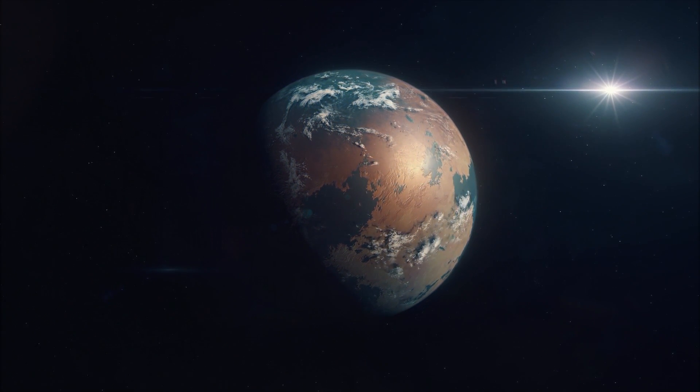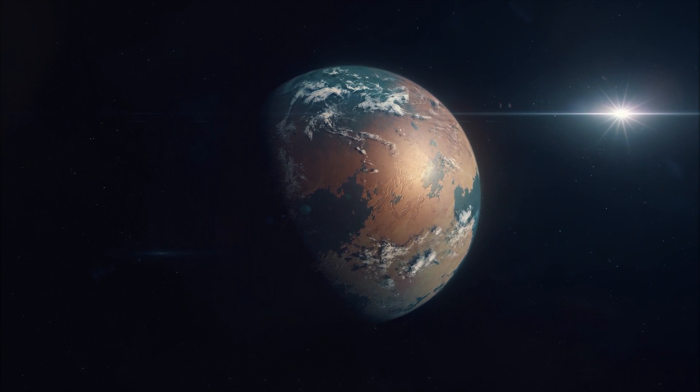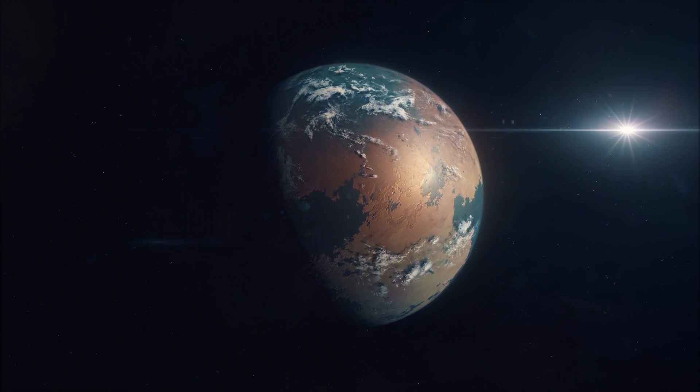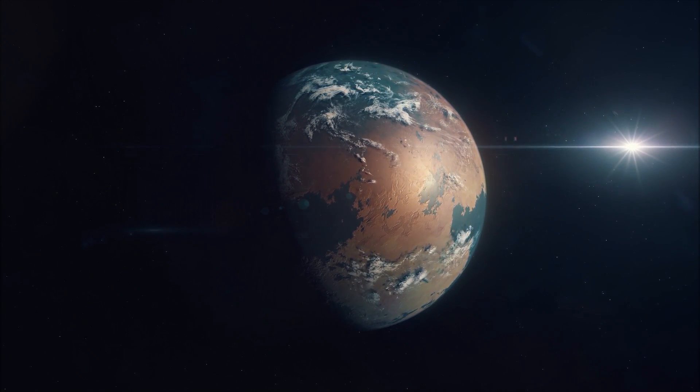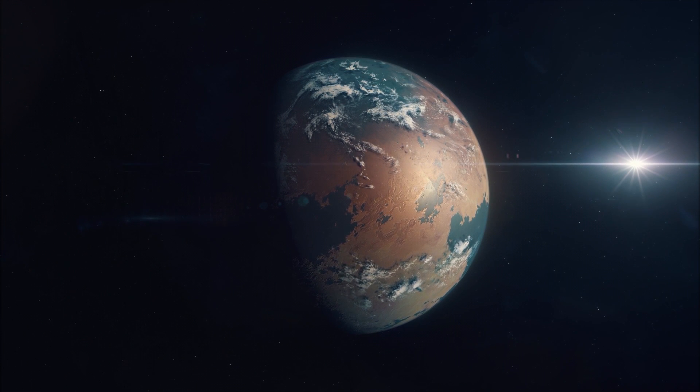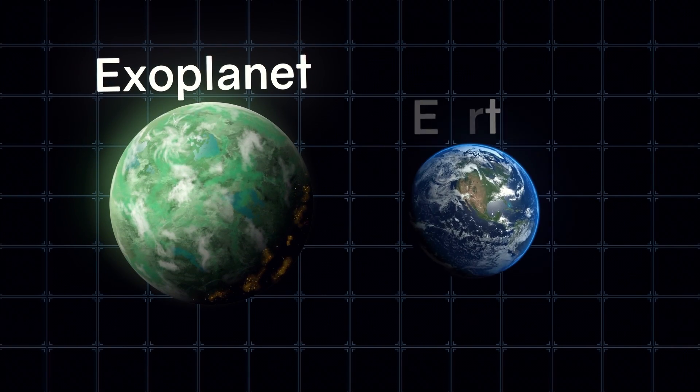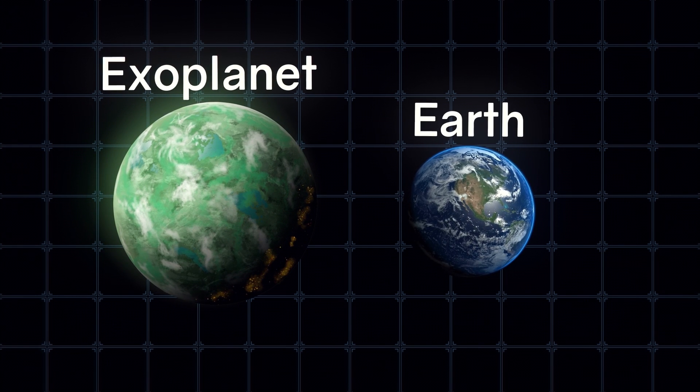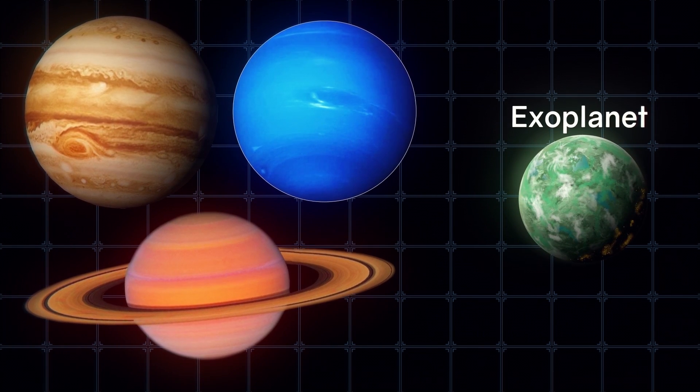Researchers expect that TESS will discover more than 20,000 exoplanets, of which 500 to 1,000 will be terrestrial and even superterrestrial planets, with orbital periods of up to 10 months. A superterrestrial type is a planet whose mass is greater than the mass of the Earth, but less than such giants as Jupiter, Saturn, and Neptune.